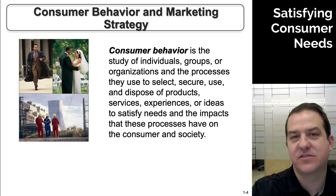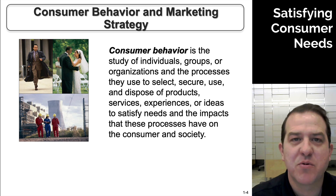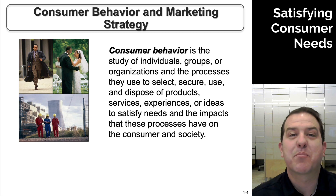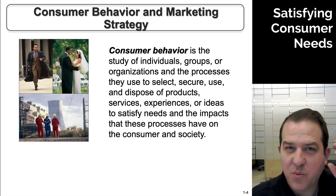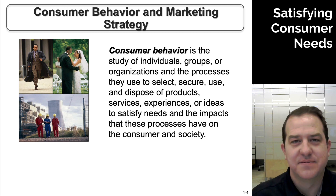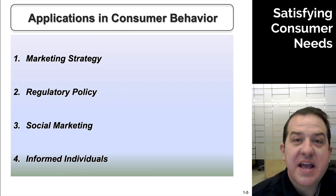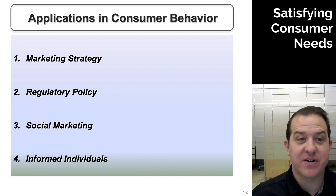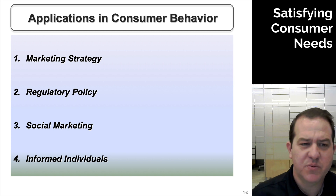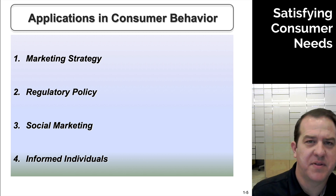We have a framework and we're going to come back to this over and over, but it's important we have a stable spot to start. We're going to study individuals, groups, and organizations and the processes they go through internally to figure out how to satisfy a need. There are different applications for consumer behavior — the first and my favorite is marketing strategy. Number two would be regulatory policy — what happens when the government gets involved to stop or start things.